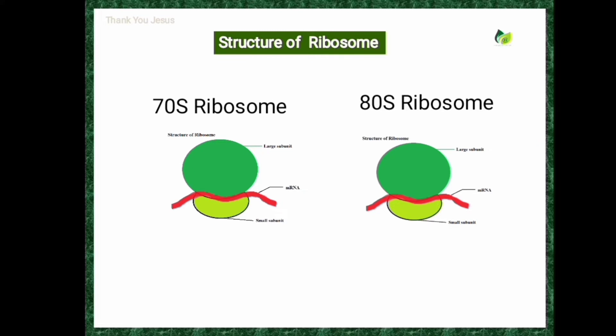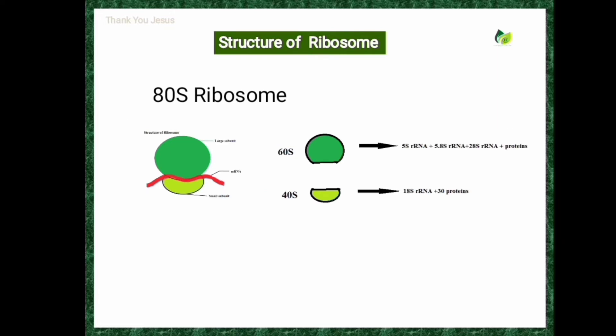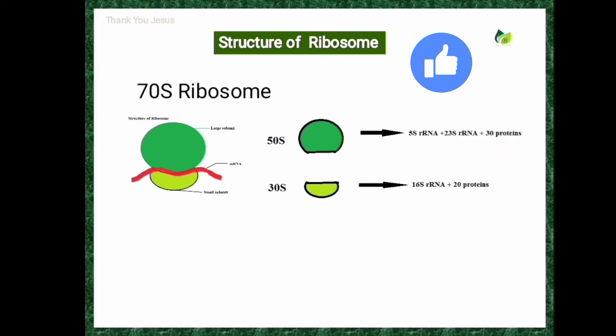Ribosomes are synthesized in the nucleolus present in the nucleus, then transported to the cytoplasm during protein synthesis. Ribosomes consist of two unequal subunits: the 70S type of ribosome consists of 50S and 30S subunits, whereas the 80S type of ribosome consists of 60S and 40S subunits.